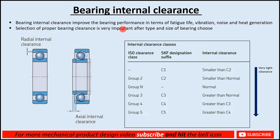There are two types of internal clearances in a bearing: one is radial internal clearance and another is axial internal clearance. With the rolling element, the outer case has some play in the radial direction — perpendicular to the axis of the bearing. This play in the radial direction is why we call it radial internal clearance.